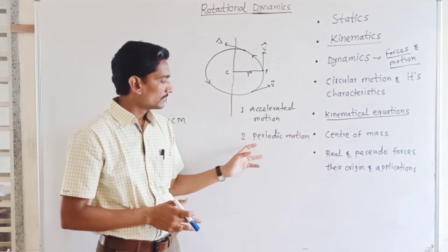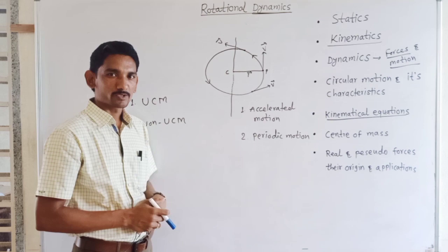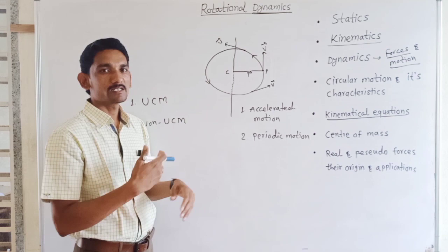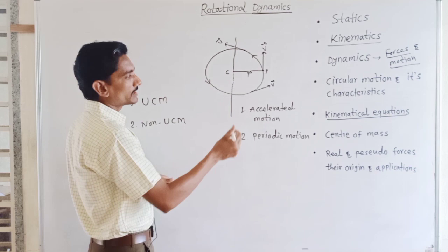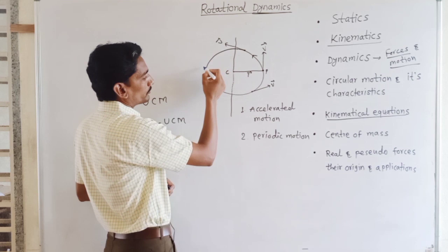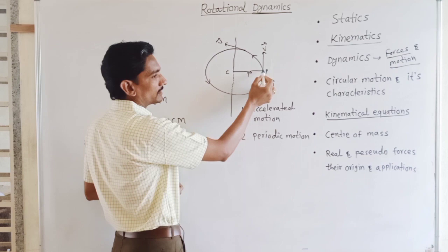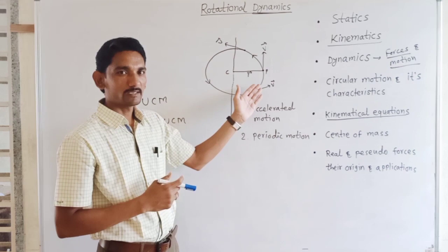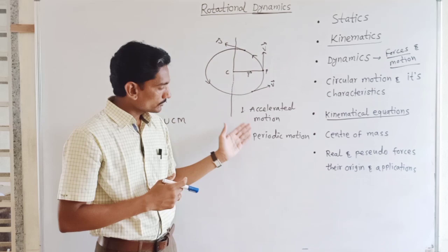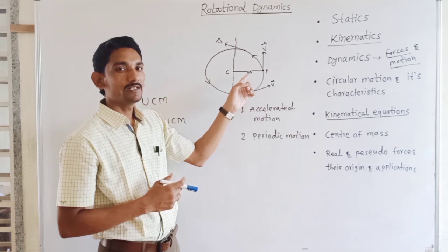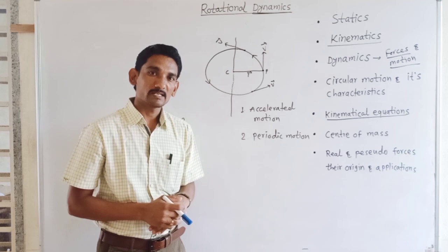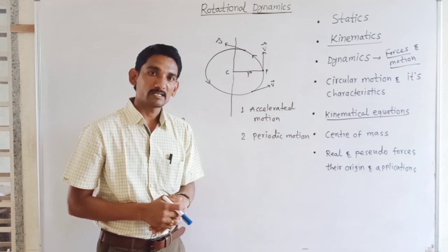The second characteristic of circular motion is that it is periodic motion. Periodic means the motion is repeated after a certain interval of time. Initially the object is at a position; it moves along the circumference and again reaches its original position. If force is continuously supplied, the object does not stop and continuously moves along the circular path, repeating its path again and again. So the motion is periodic.